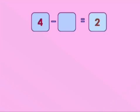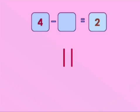Next question: 4 minus blank equals 2. 4 is the greater number, so first we will draw 4 lines: 1, 2, 3, 4. In the question we have 2, so we will mark 2 lines from these 4 and remove them. The remaining number of lines will be our answer. How many lines are left? 2. So 4 minus 2 equals 2.